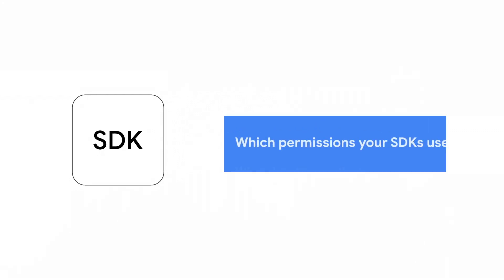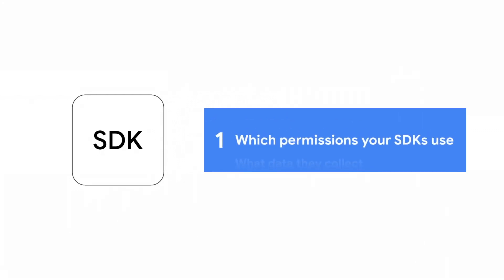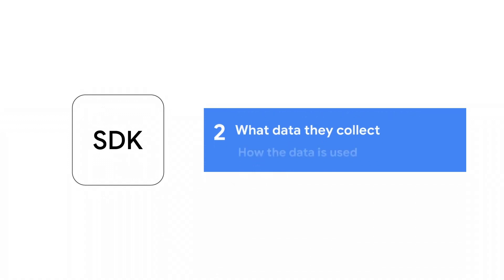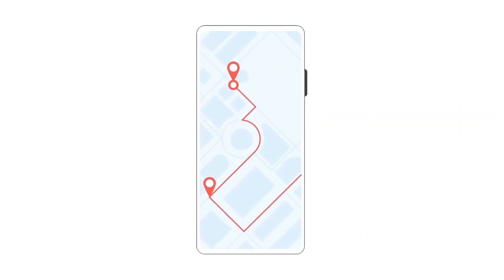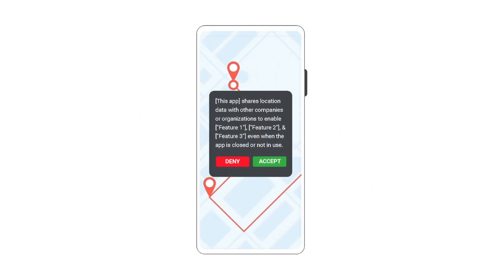Consider the following best practices to help keep your users and apps safe when using SDKs. Ensure you know which permissions your SDKs use, what data they collect, how the data is used, and be sure to include these in your data safety form. Any data your app shares with third parties or SDKs must be prominently disclosed to users, and users must consent to this use prior to the data being shared.